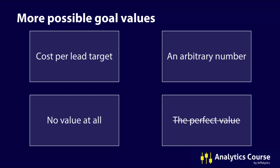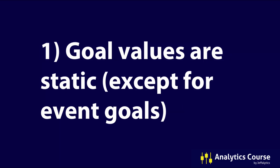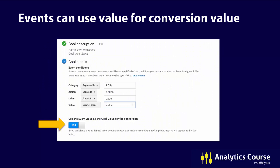You shouldn't be looking for a perfect value — it probably doesn't exist. Now, before I tell you the right value, here are some considerations. Number one: goal values are static except for event goals. Whenever you put in a value in a goal, it's static. If you put $5 in, every time somebody hits that goal, $5 is what gets triggered — it's not dynamic. As you can see here in an event goal, you can use the event value as the goal for the conversion. But events don't let us do funnels or all these awesome things around conversion tracking.